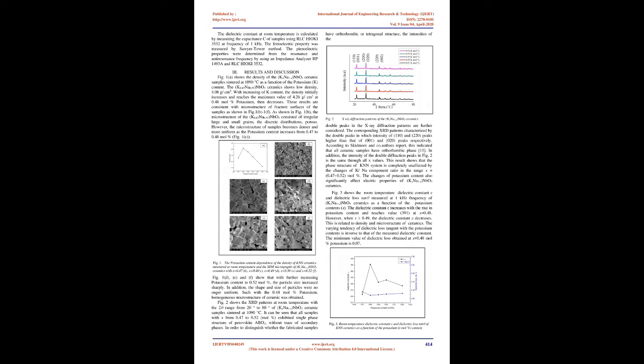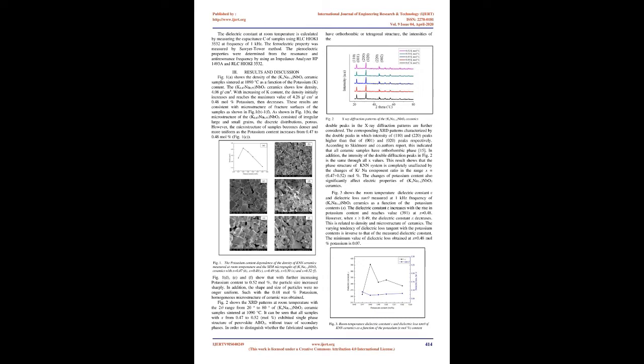The ground materials were pressed into discs 12 millimeters in diameter and 1.5 millimeters thick under 100 MPa. In order to limit the evaporation of alkaline elements, these pellets were covered by powders with the same composition and then were sintered in a sealed alumina crucible at the temperature of 1090°C for two hours. The crystal structures of the sintered samples were examined by X-ray diffraction (XRD) with CuKα radiation equals 0.15406 nm using a D8 Advanced Bruker. The grain morphology of the samples was examined by scanning electron microscopy (Nova Nano SEM 450 FE). The densities of samples were measured by Archimedes' method. The ceramic samples were poled in a silicone oil bath at 80°C by applying DC field of 30 kV/cm for 20 minutes, then cooled under the same electric field.